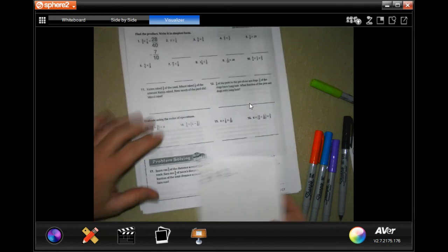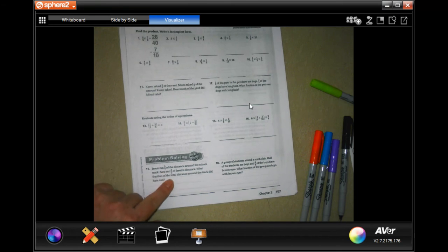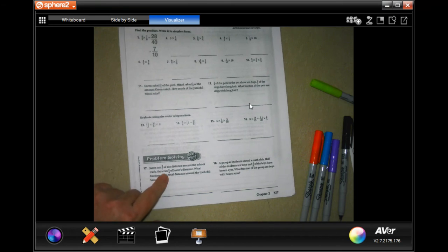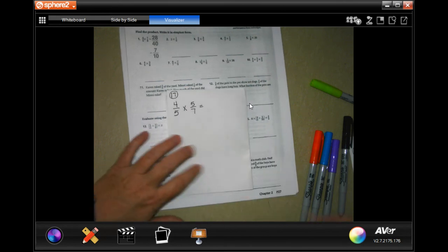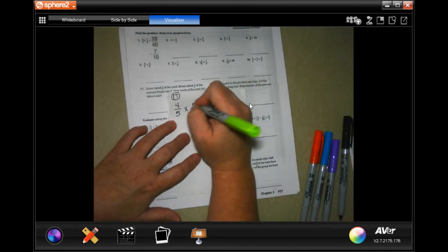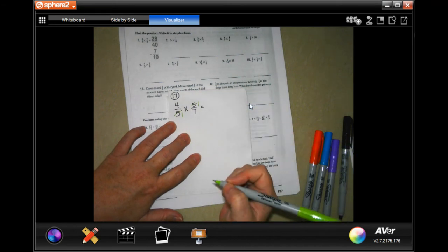We are going to go down to number 17. Jason ran 5/7 of the distance around the school track. Sarah ran 4/5 of Jason's distance. So we're going to do 4/5 times the 5/7 that Jason ran. Two with the same number, cross them out, put 1. 5 goes into 5 once on both times.